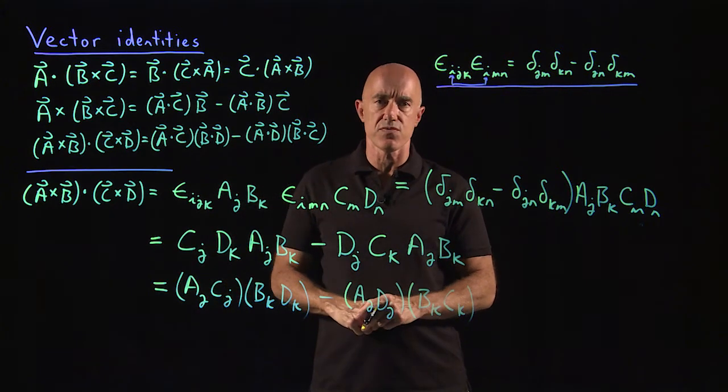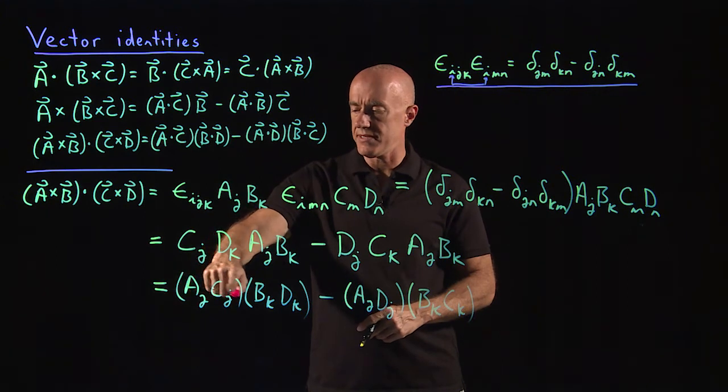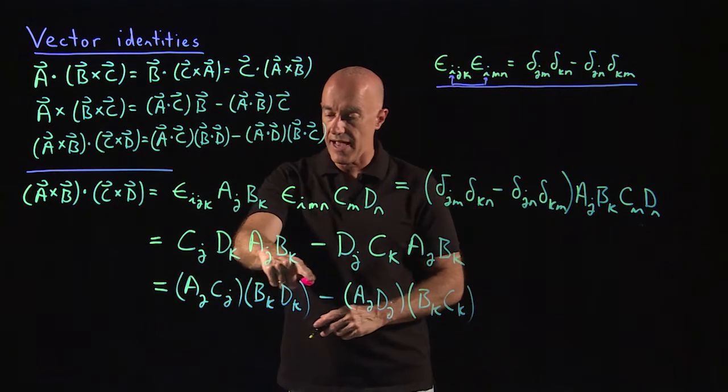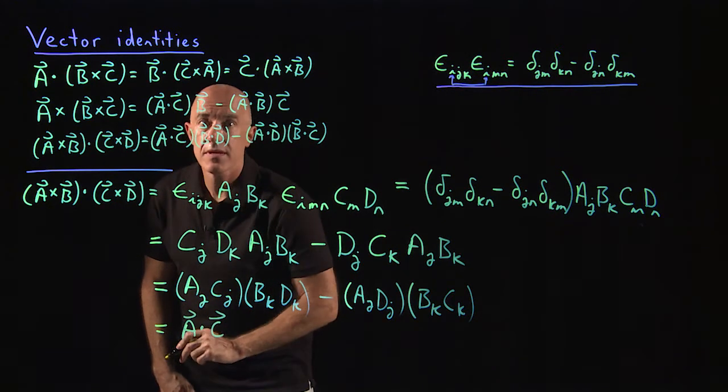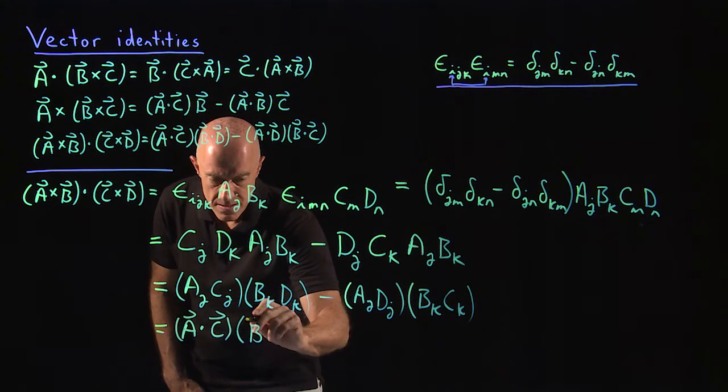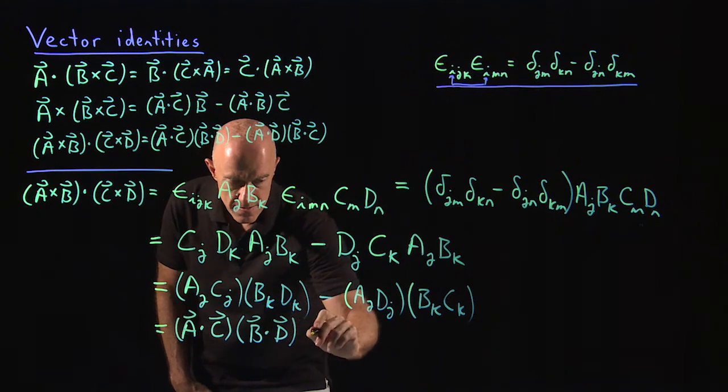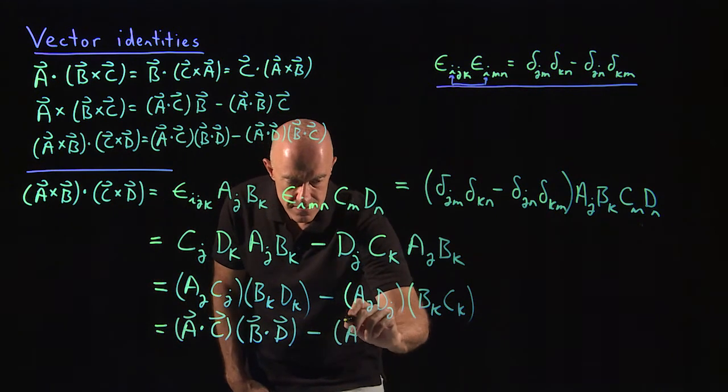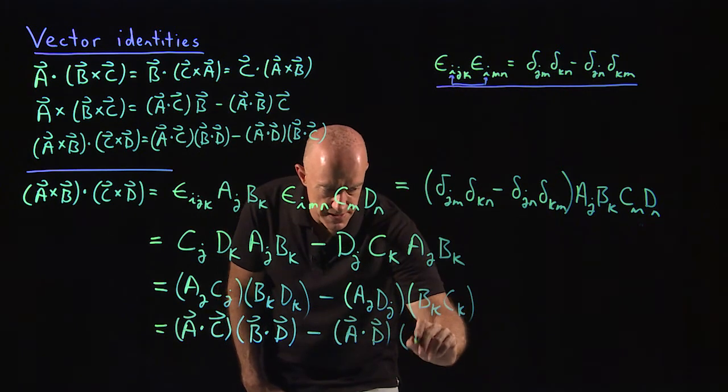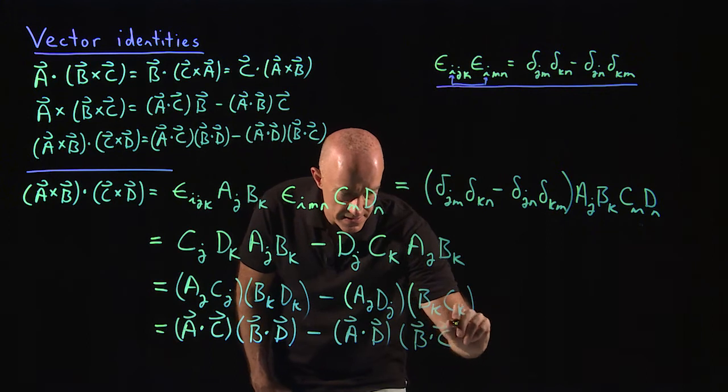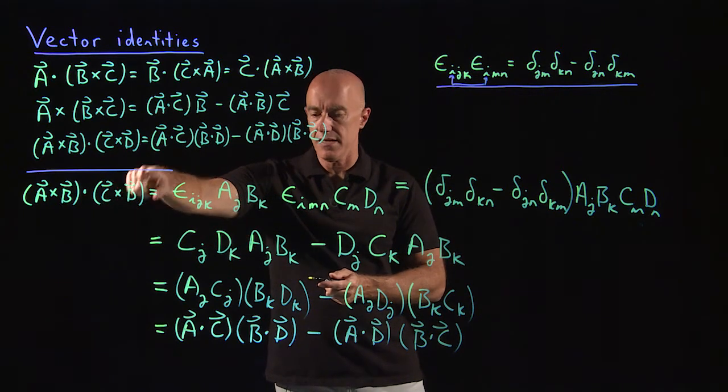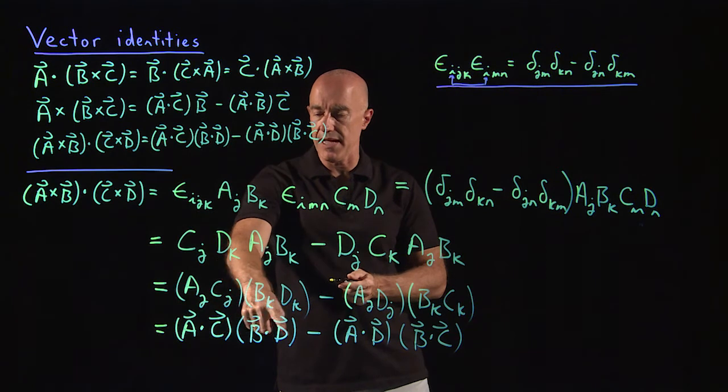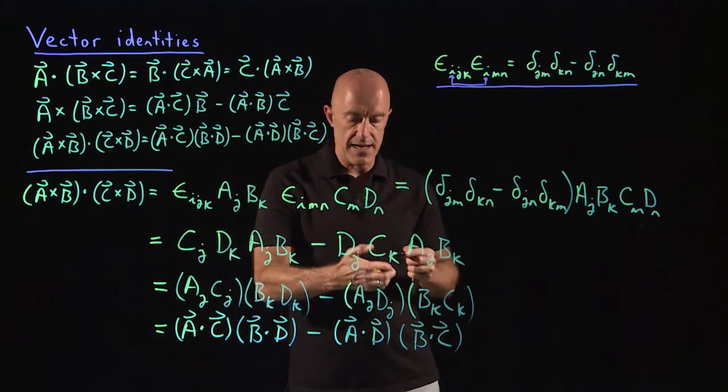So remember, a_j c_j. We're summing over j equals 1, 2, 3. So this is a1·c1, plus a2·c2, plus a3·c3. That's just A·C, right? And that last one is B·D. So this is A·C, this one is B·D, minus this is A·D, this one is B·C. And that completes our vector identity. (A×B)·(C×D) is equal to (A·C)(B·D), minus (A·D)(B·C).